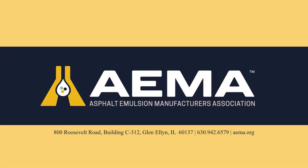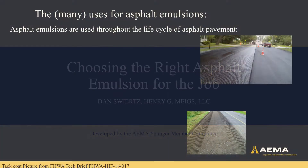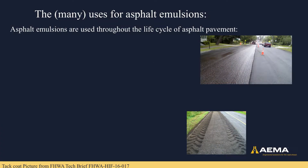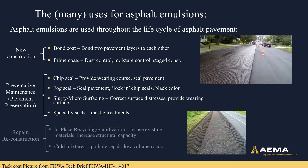This technical presentation is brought to you by the Asphalt Emulsion Manufacturers Association, or EMA, and is titled Choosing the Right Asphalt Emulsion for the Job. Asphalt emulsions are used throughout the life cycle of all asphalt pavements, everything from new construction to maintenance to reconstruction. This slide lists only a few examples of the different treatments and processes that utilize asphalt emulsion, but serves to show the extreme versatility of these products.